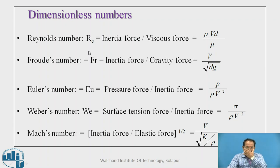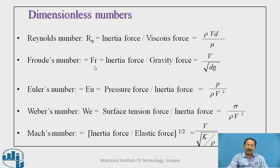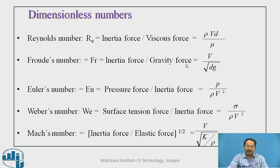The second is Froude's number, where gravity force is the predominating force. It is the ratio of inertia force to gravity force, and the equation is: Fr = V / √(Dg).